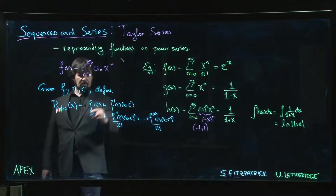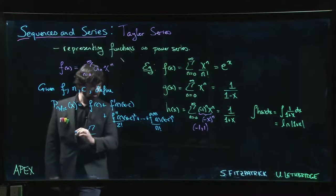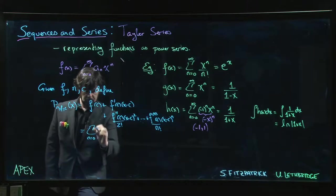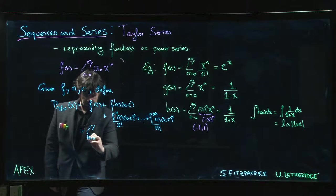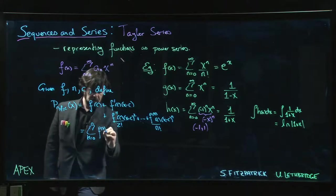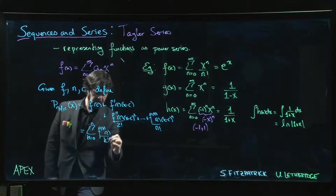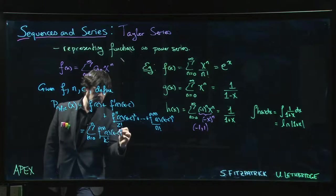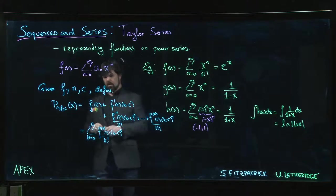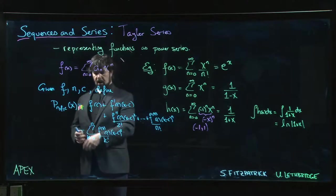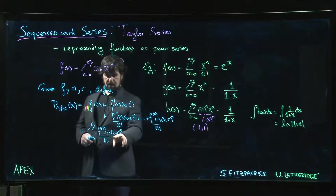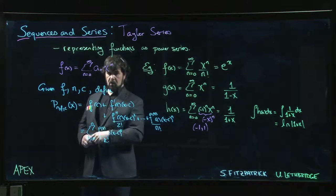But this starts to be a bit of a mouthful, so why not put it into summation notation? k goes from 0 to n, kth derivative at c divided by k factorial times (x - c) to the k. That looks a little bit like a power series except we stop—it's a polynomial. But we've got a power of x, we've got a coefficient—starting to look more like a power series.